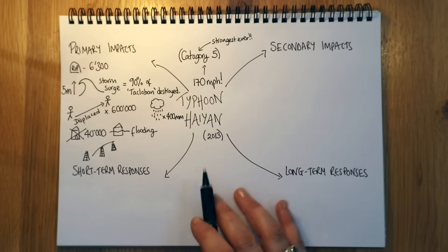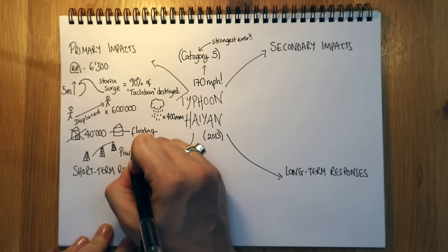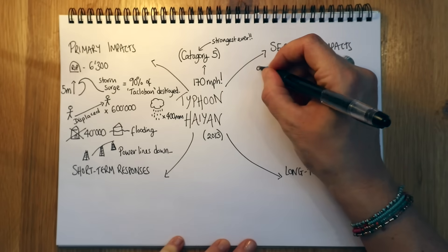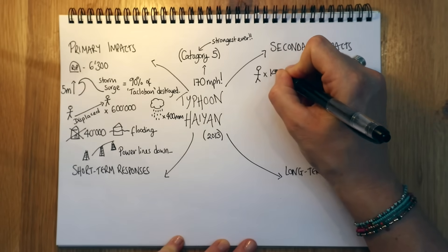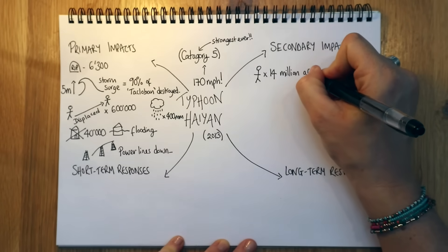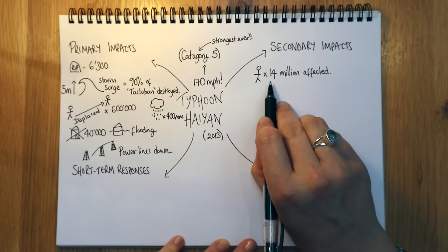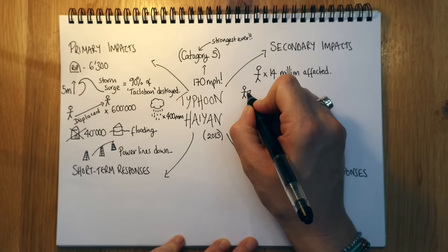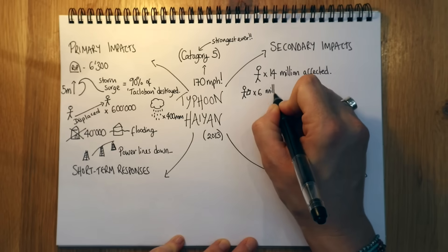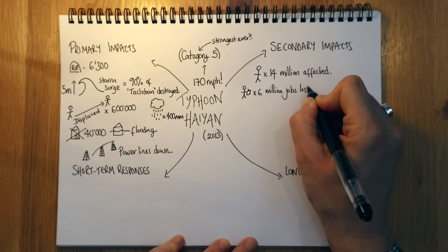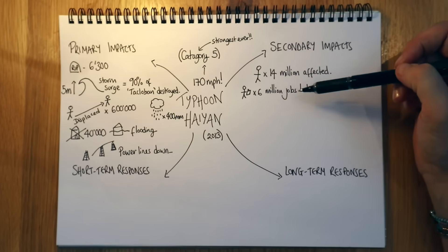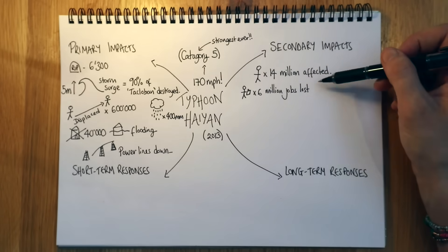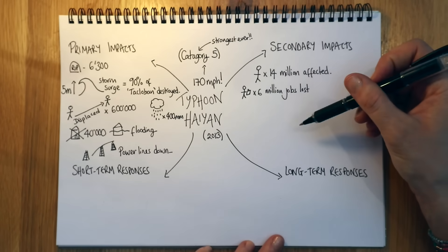Moving on to the secondary impacts: by the end of this disaster, 14 million people across the Philippines had been affected in one way or another — a really staggering number. Out of those, six million jobs were lost, which obviously affects individuals but on a wider scale affects the country's ability to recover, as those taxpayers aren't contributing, and so infrastructure and services can't easily be repaired.